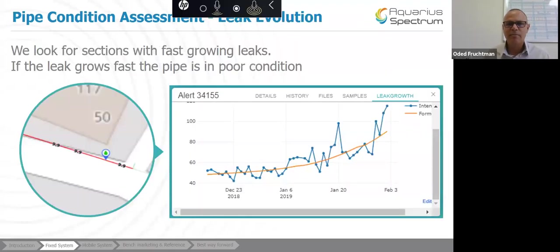Growth rate of leak. Sometimes we would highlight a pipe that has only one leak, but the leak is growing very very fast. As you can see, this leak was identified by the system in 23rd of December 2018. And by the time the customer fixed it, in February 3rd, it almost doubled or tripled the size of it. So these are quite unique, specific leaks that can be found on a very poor condition of pipes.